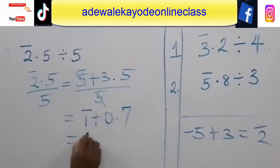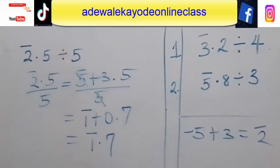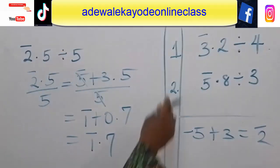Add by 1 plus this, that'll give me by 1 point 7. That is 2.5 to be divided by 5 will give me 1.5.